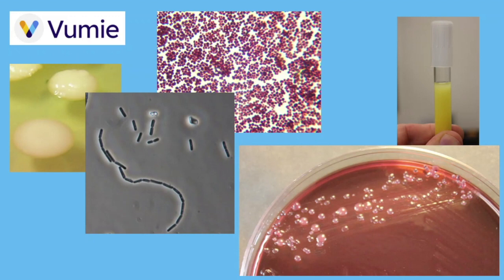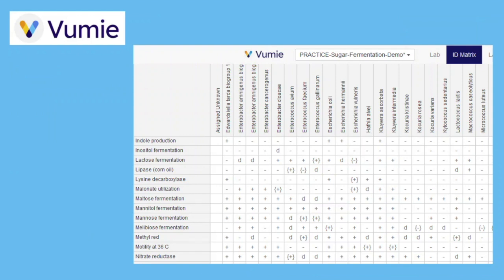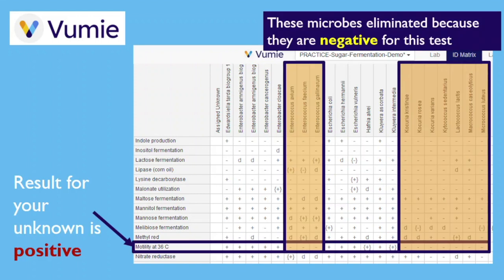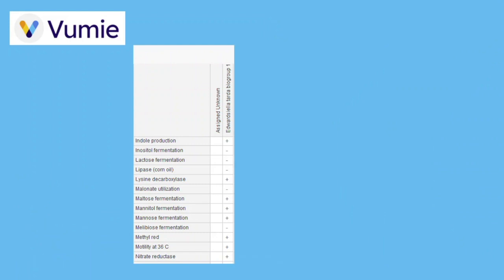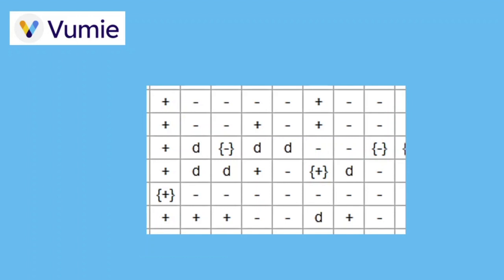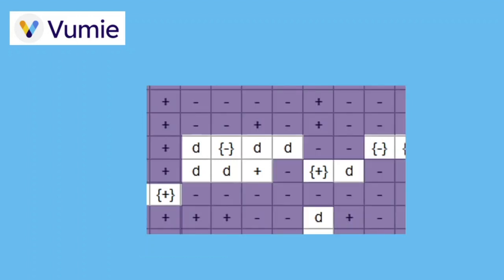We start with all possible species found in the matrix. As test results are entered, all microbes not fitting the profile are eliminated. All bacteria giving positive results for a test are eliminated when you enter a negative result. Every time you enter a positive result for a test, species that would give a negative result are eliminated. The clues are used to eliminate all bacteria that don't match up. The exceptions are bacteria giving results of bracketed pluses or minuses, or a D, which remain possibilities until eliminated by a clear positive versus negative test result.